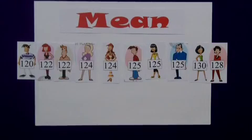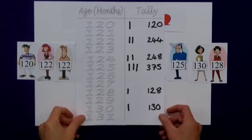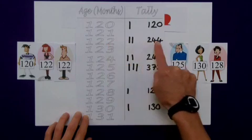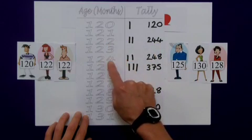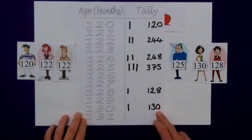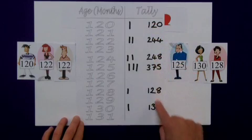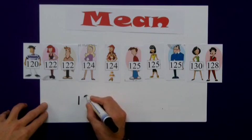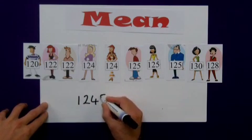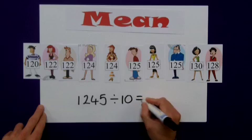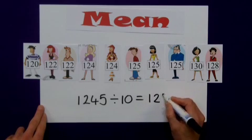One way of reducing errors is going back to your tally chart and working out your values there. So here I have one lot of 120, two lots of 122 giving 244, two lots of 124 giving 248, and so on. Now I have fewer values to add up, reducing the possibility of error. All of my values added together give me a total of 1245. I then divide by the number of values, which is 10, giving me a mean of 124.5.